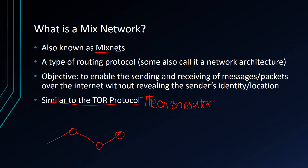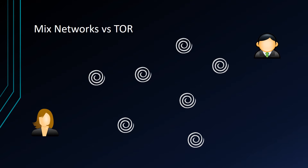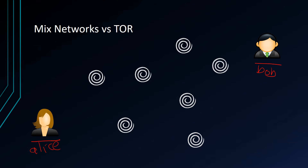So let's say we have Alice and we have Bob — in this case Bob can be a website or just another person Alice is trying to email. In a traditional internet routing system, Alice doesn't choose her own route; she basically connects to Bob directly. Even though in the real world the packets do pass through a certain number of nodes, there is no privacy component to this.